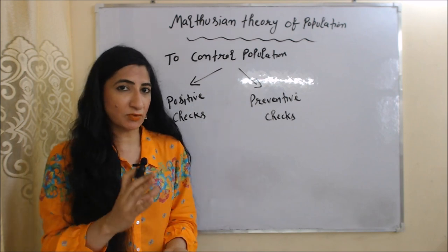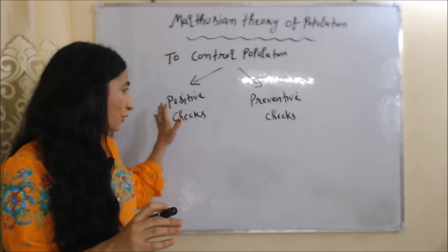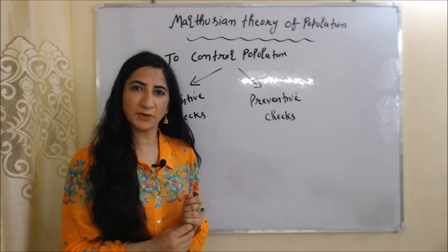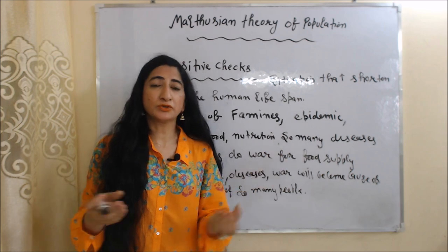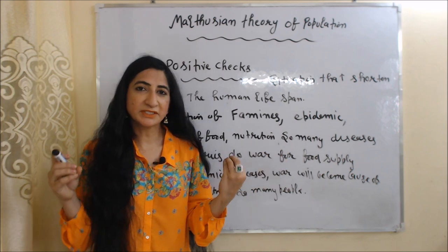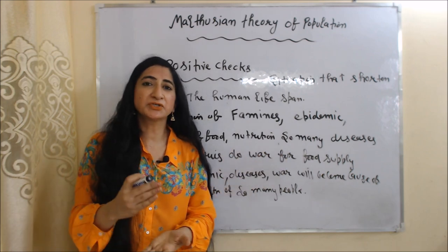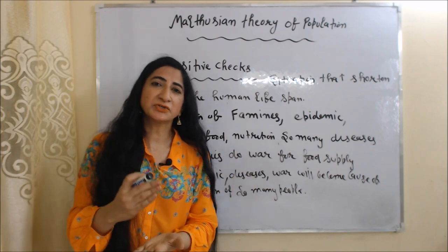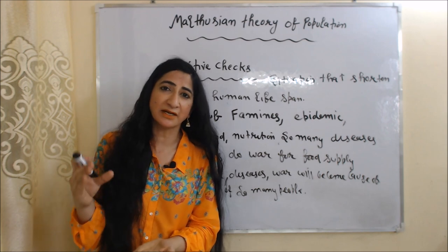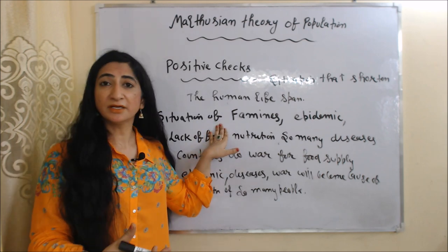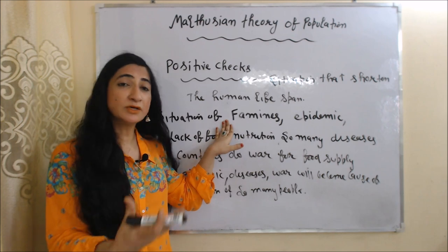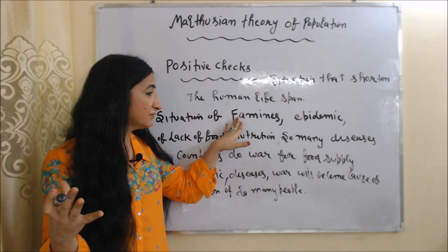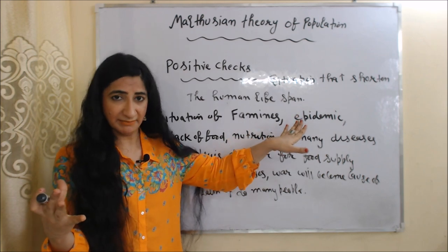To control population, Malthus talks about two types of checks: positive checks and preventive checks. Positive checks are situations that shorten the human lifespan. For example, if population is growing but people do not have food to eat for a very long time period, it will create situations of famines and epidemics.